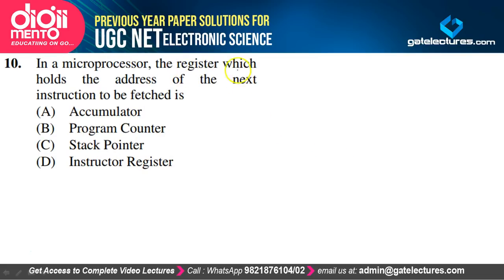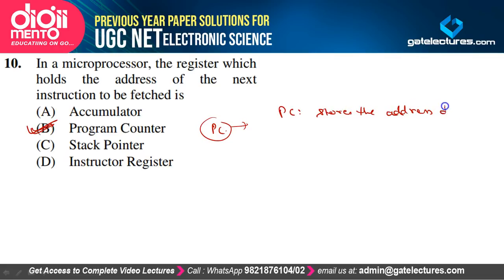In a microprocessor, the register which holds the address of the next instruction is the Program Counter (PC). PC stores the address of the next instruction — option B is correct. The accumulator is just a register; the stack pointer stores the address of the stack in RAM; the instruction register is also not correct. Program counter is the right answer.